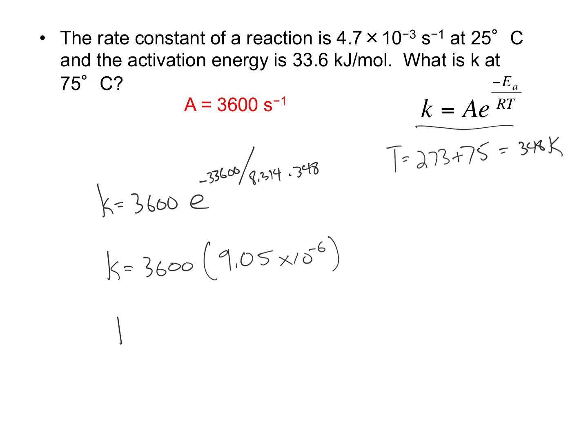And when I multiply those out, I get for the rate constant at 75 degrees Celsius, 0.033, and my initial rate constant, and my final rate constant should all have the same units. And so this would be our final answer.